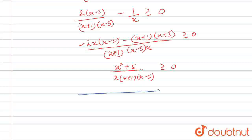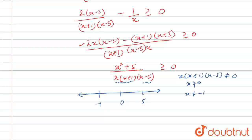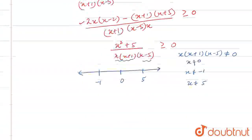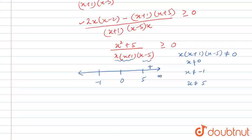When we solve this equation on the number line, we get some extreme points like minus 1, 0, and 5. All denominator components are not equal to 0, so x is not equal to 0, x is not equal to minus 1, and x is not equal to 5. Now, 5 to infinity is positive, 0 to 5 is negative, minus 1 to 0 is positive, and minus infinity to minus 1 is negative. So we will only consider the positive cases.